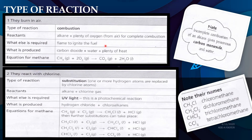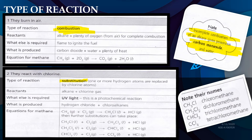In alkane you have two types of reactions: combustion reaction and substitution reaction. For combustion, you need oxygen — without oxygen you cannot undergo the process of combustion. The reactants are alkane and plenty of oxygen. If there is not enough oxygen, it will produce carbon monoxide, which is very poisonous — that is incomplete combustion.